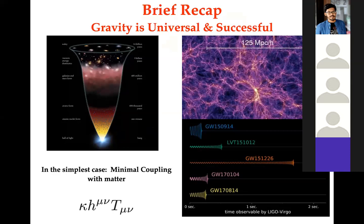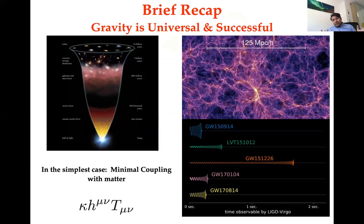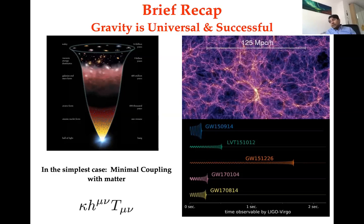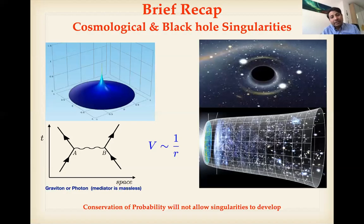Gravity is universal and an extremely successful theory — especially Einstein's theory of General Relativity. It explains very well the early universe cosmology within roughly 100 h⁻¹ Mpc, and recently we have seen many events from gravitational waves detected by LIGO and Virgo. Einstein's General Relativity has been extremely successful. However, it also has features you would not like to see in a decent theory — cosmological and black hole singularities.